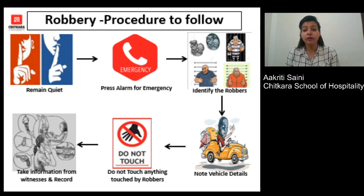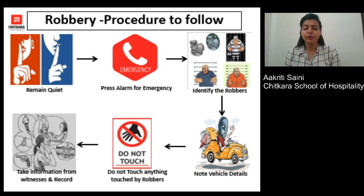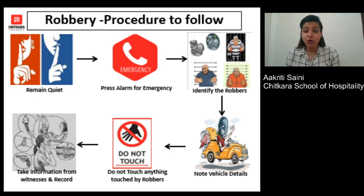When you see the robbers leaving, try to note the vehicle number or registration of the vehicle so that it can be reported to the police station. Do not touch any areas that have been touched by the robbers, as it may leave your fingerprints and destroy their fingerprints which are needed for police investigation. Take information from as many witnesses as possible and record it in the robbery sheet or incident report. Do not shout or create panic, as a robber may shoot.